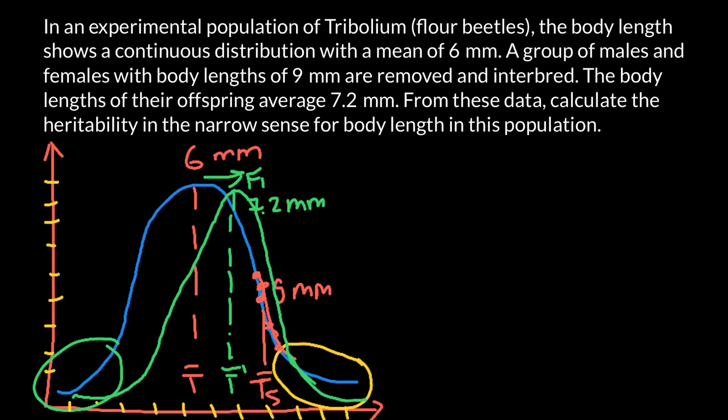So basically, we would have the same bell-shaped curve. But as you see, the mean has shifted from 6 to 7.2 millimeters. On my picture, this green curve is more pointed, but actually it has to be the same shape as this blue line here, just shifted a little bit to the right. Because the mean of the body size would be greater than the mean of the base population. So now let's solve the problem.